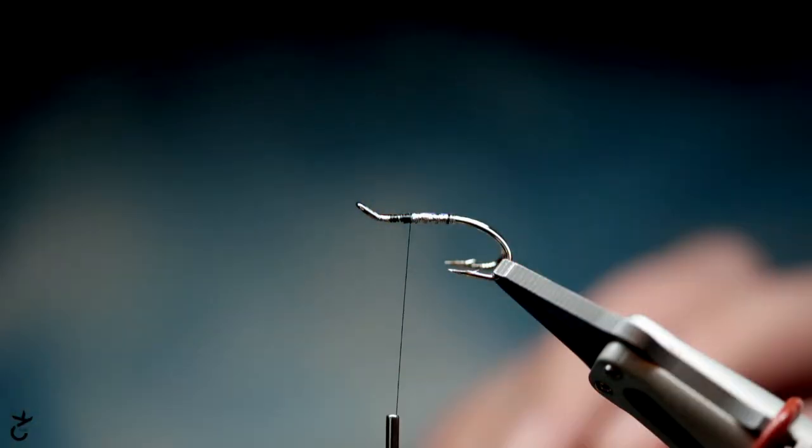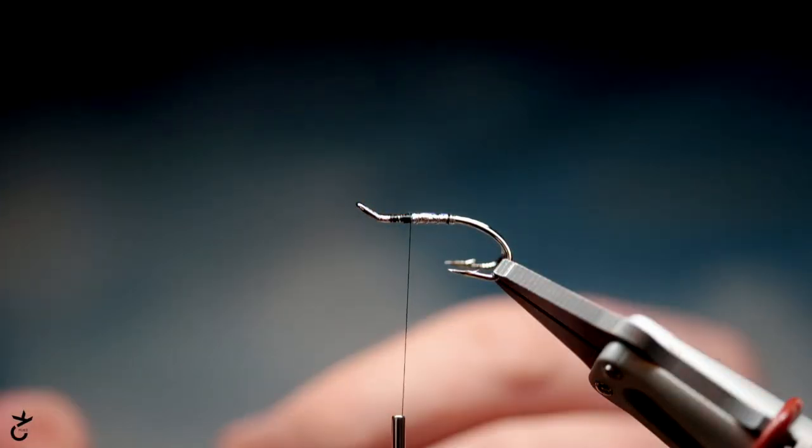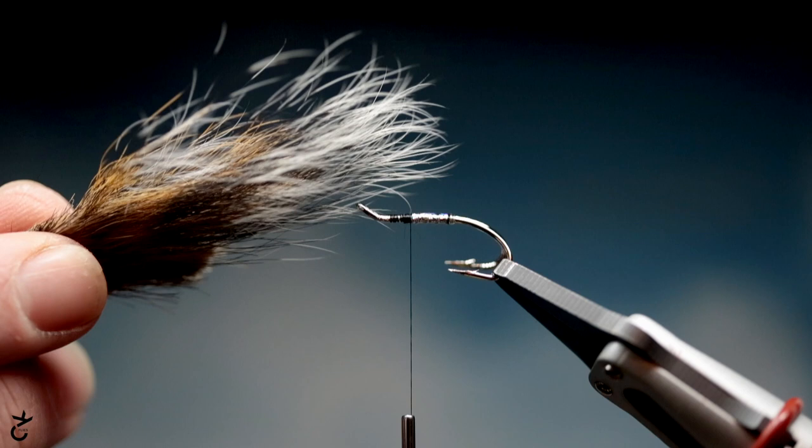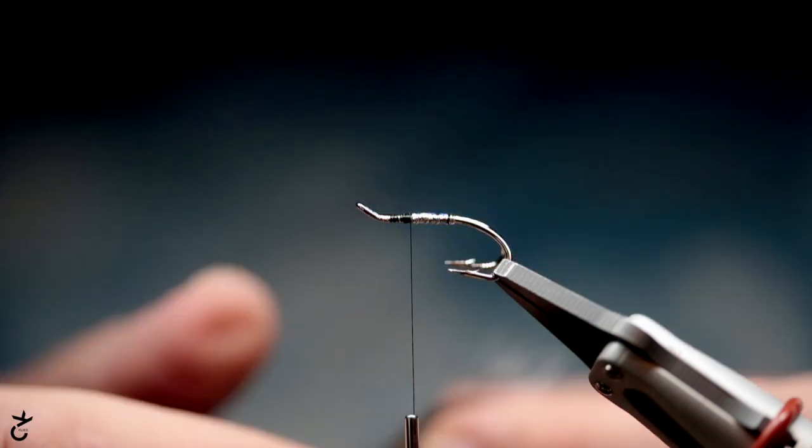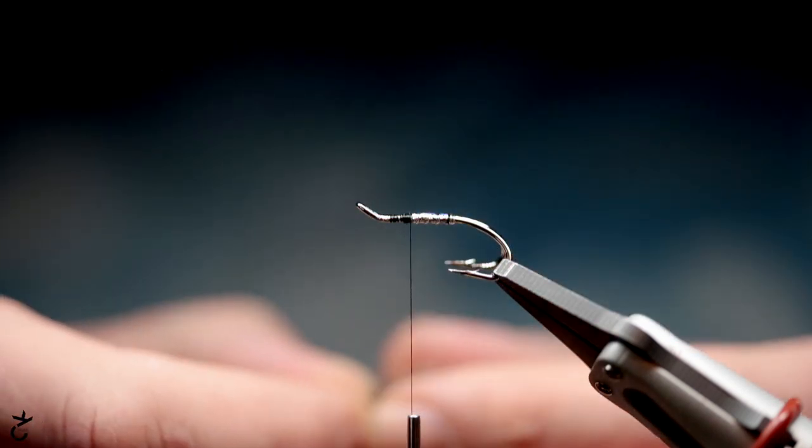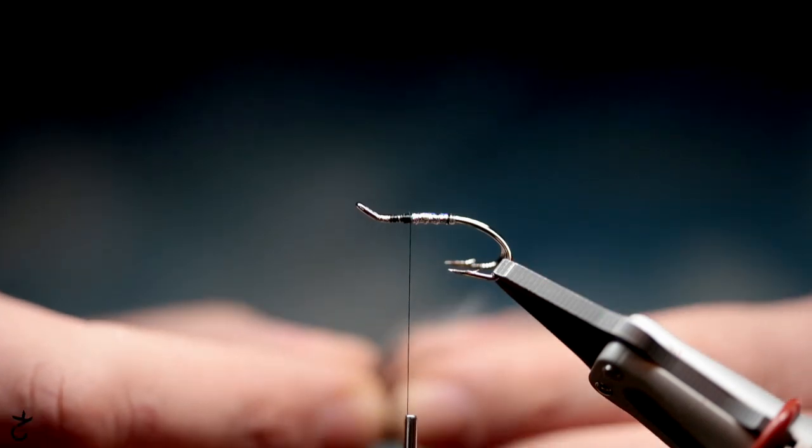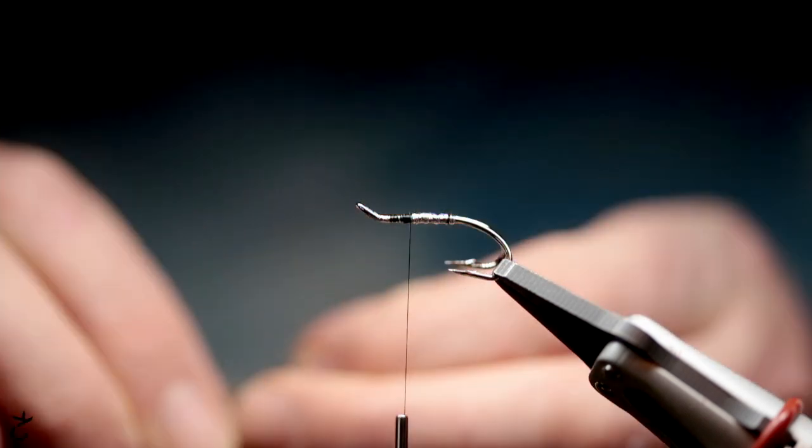This is why this is slightly different. I'm going to put a rear top and bottom wing in on this one, just to use all the Ally Shrimp materials really. So I'm just going to take a really small bit of squirrel.